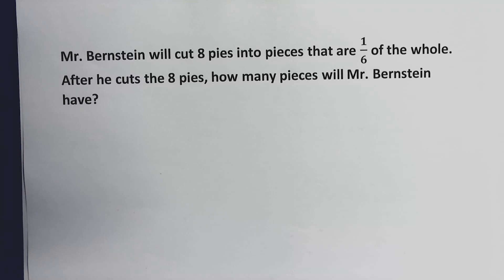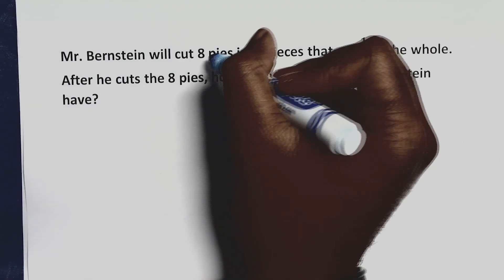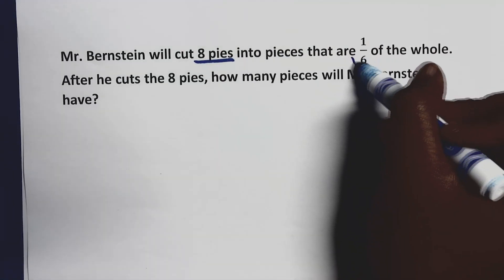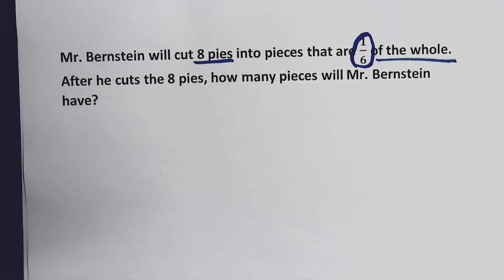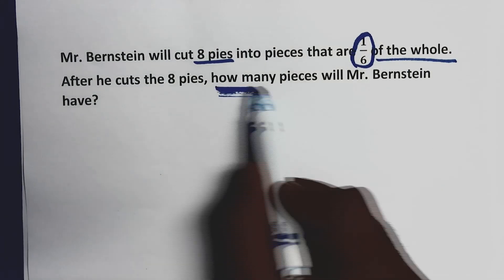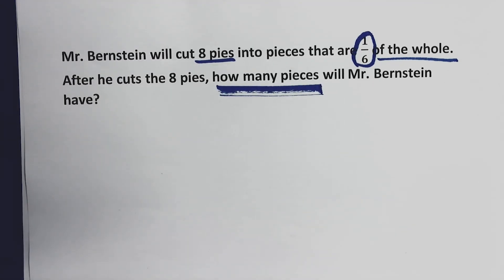Again, Mr. Bernstein will cut eight pies into pieces that are one-sixth of the whole. After he cuts the eight pies, how many pieces will Mr. Bernstein have? Let's see how we can solve this. Let's find out what the problem is asking us to find. We know that Mr. Bernstein has eight pies and he's cutting them into a sixth of the whole pie. We're looking to see how many pieces does he have. To figure this out, we can look at this in several ways. I'm going to show you two. I'm going to draw a model.